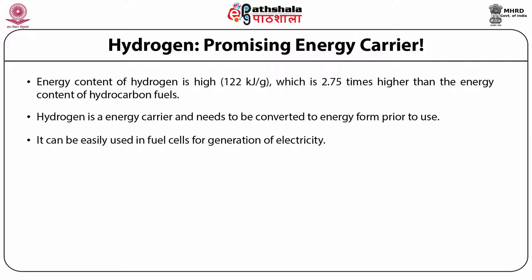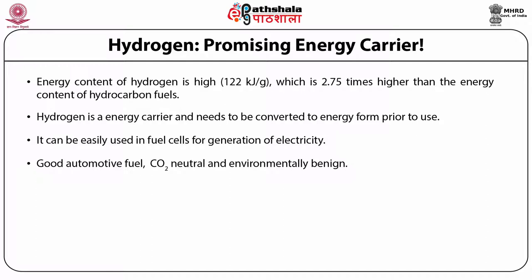Because hydrogen is an energy carrier, it needs to be converted to different energy forms. A fuel cell is a mediator — if we pass hydrogen through a fuel cell, it can lead to the generation of electricity. So electricity can serve as a good source of energy from hydrogen, making it a very good, cleaner source of energy. Further, hydrogen also has advantage as a good automotive fuel, and importantly, it is carbon dioxide neutral. When hydrogen burns, it releases water, which is clean. That indicates production of hydrogen is not associated with generation of greenhouse gases, so this is environmentally friendly.